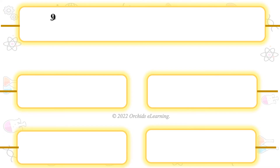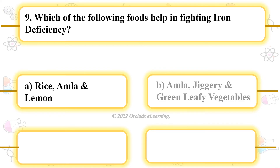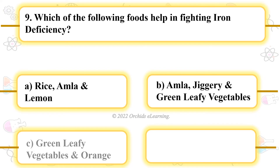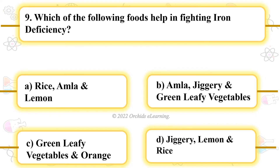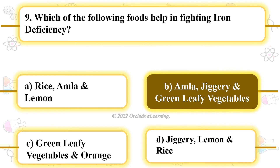Which of the following foods help in fighting iron deficiency? B. Amla, jaggery, and green leafy vegetables.